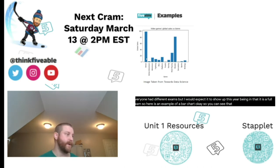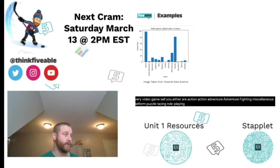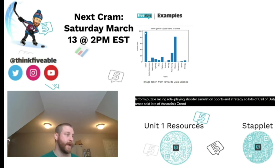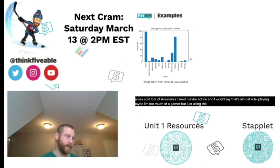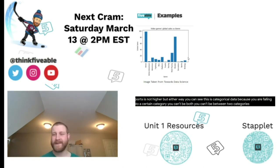Here's an example of a bar chart showing video game sales by genre. Every video game sale falls into a category: action, action-adventure, adventure, fighting, miscellaneous, platform, puzzle, racing, role-playing, shooter, simulation, sports, and strategy. Lots of Call of Duty games sold — that's shooter — and maybe Assassin's Creed for action or role-playing. Sports is surprisingly not higher. You can see this is categorical data because each game falls into a certain category — you can't be between two categories.